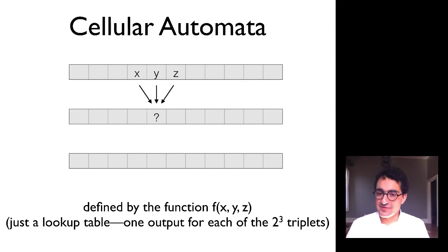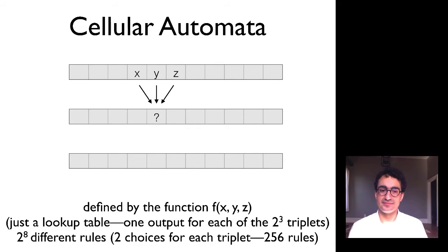I have two possible values for x, two possible values for y, two possible values for z, two to the power three or eight possible values that could drive the value of the question mark pixel. And my function f has to tell you what happens for each of those possible eight combinations. If you think about it, if there are eight possible combinations and I have to specify a one or a zero for each of those eight, I now have two to the power of eight different rules.